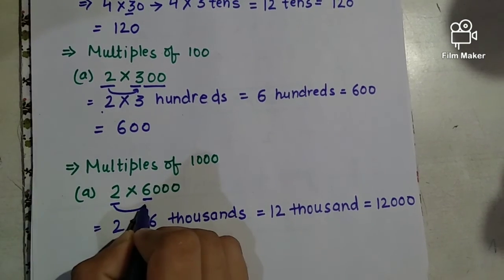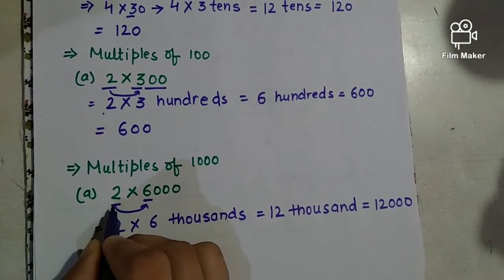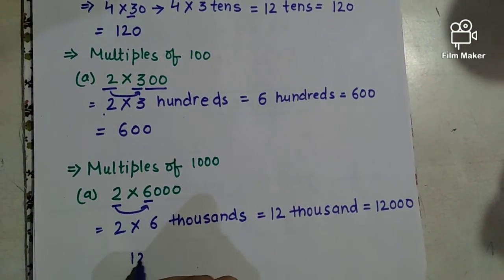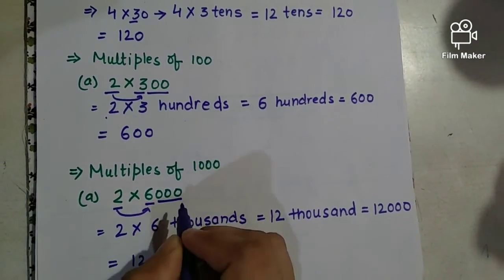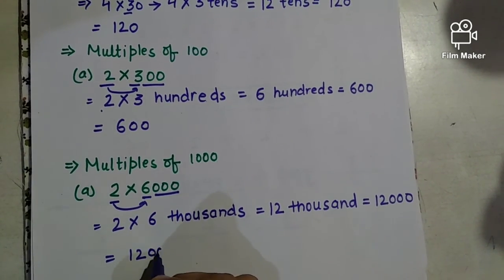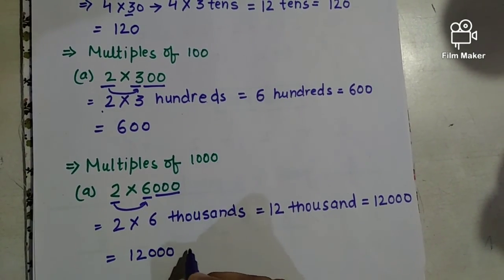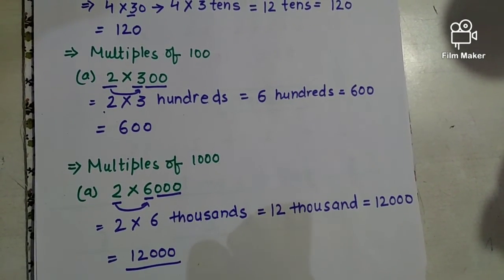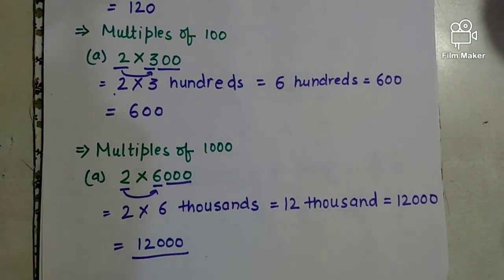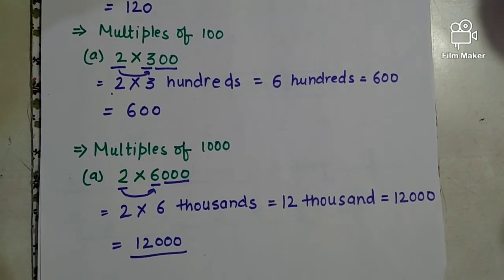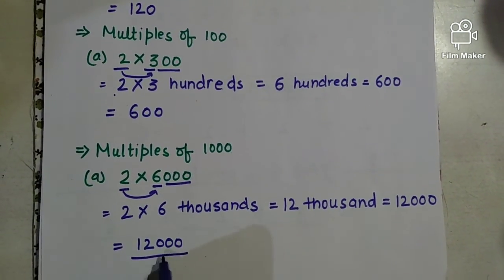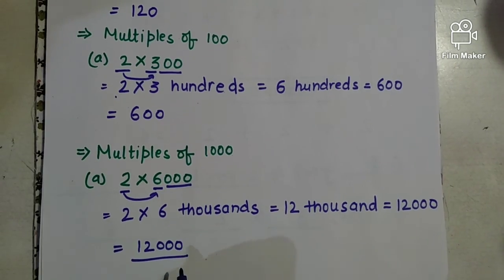So I multiplied two into six: two sixes are twelve. There are three zeros, so if I add three zeros to twelve I get twelve thousand. It is very easy to multiply a number by a power of ten.